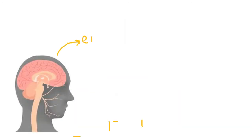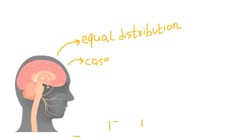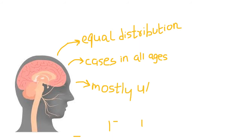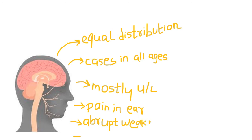Regarding clinical presentation, Bell's palsy has an equal racial and sex distribution. Cases occur in all ages but the incidence increases with age. It is rare for Bell's palsy to be bilateral or to recur. Facial weakness is often preceded or accompanied by pain about the ear. Weakness generally comes on abruptly but may progress over several hours or even a day or so.